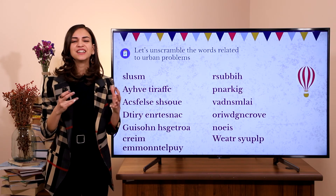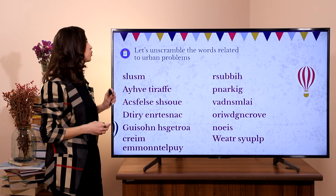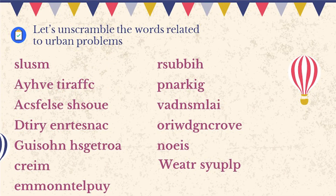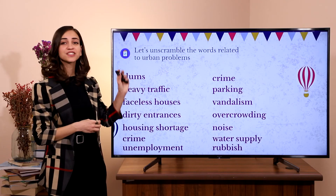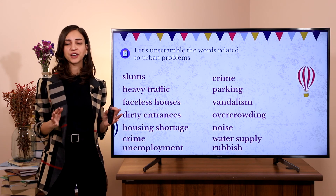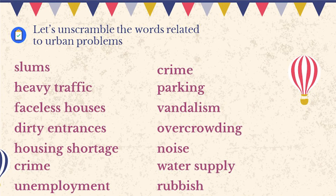Now, my dear friends, let's learn and practice the words related to urban problems. Let's unscramble the words related to urban problems. The right answers are the following, and I'm sure that you are right with most of them. Let's read and pronounce these words: slums, heavy traffic, faceless houses, dirty entrances, housing shortage, crime, unemployment, parking, vandalism, overcrowding, noise, water supply, rubbish.